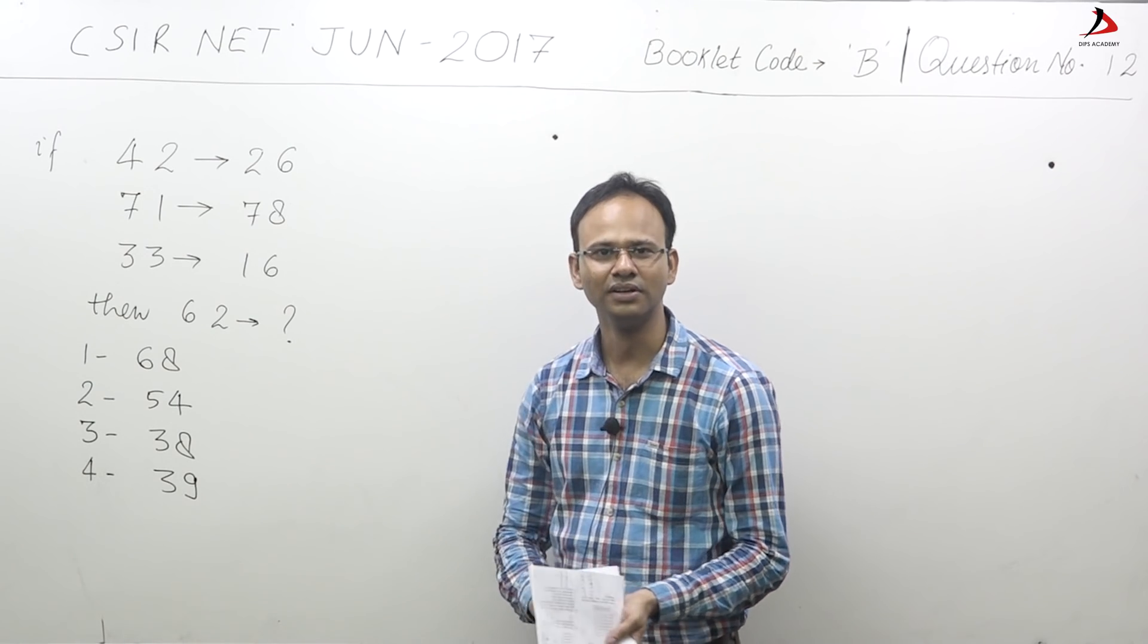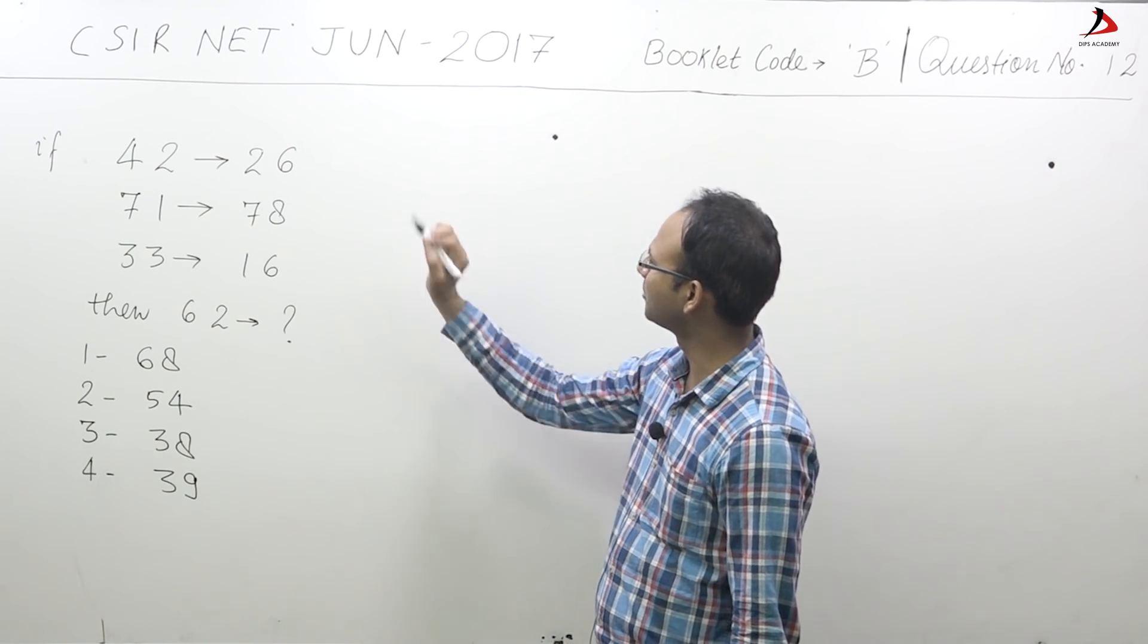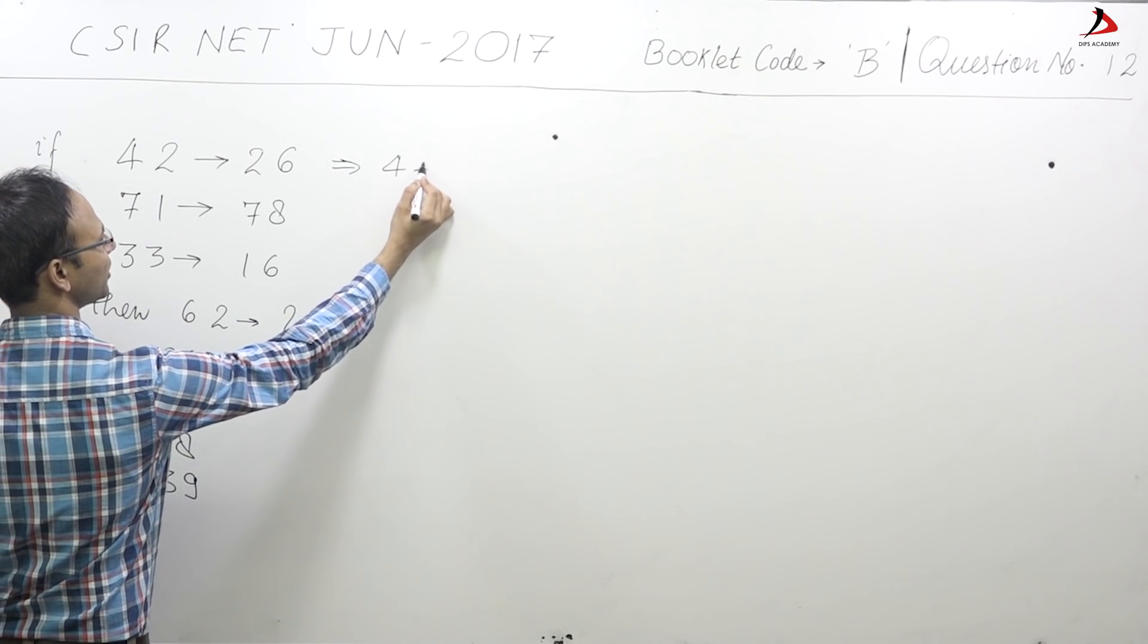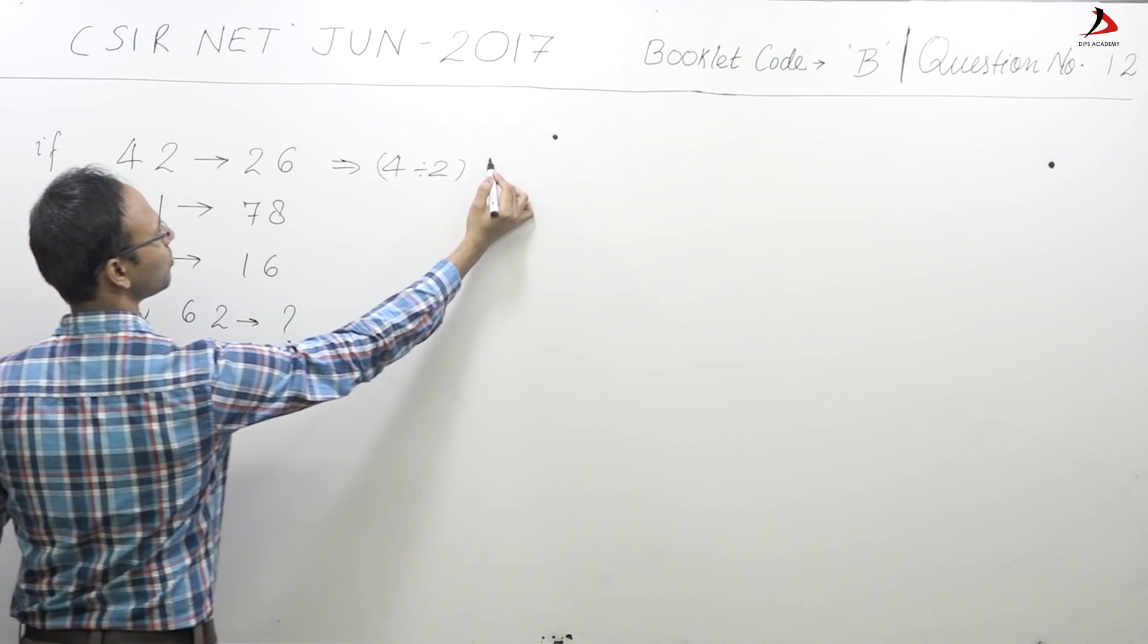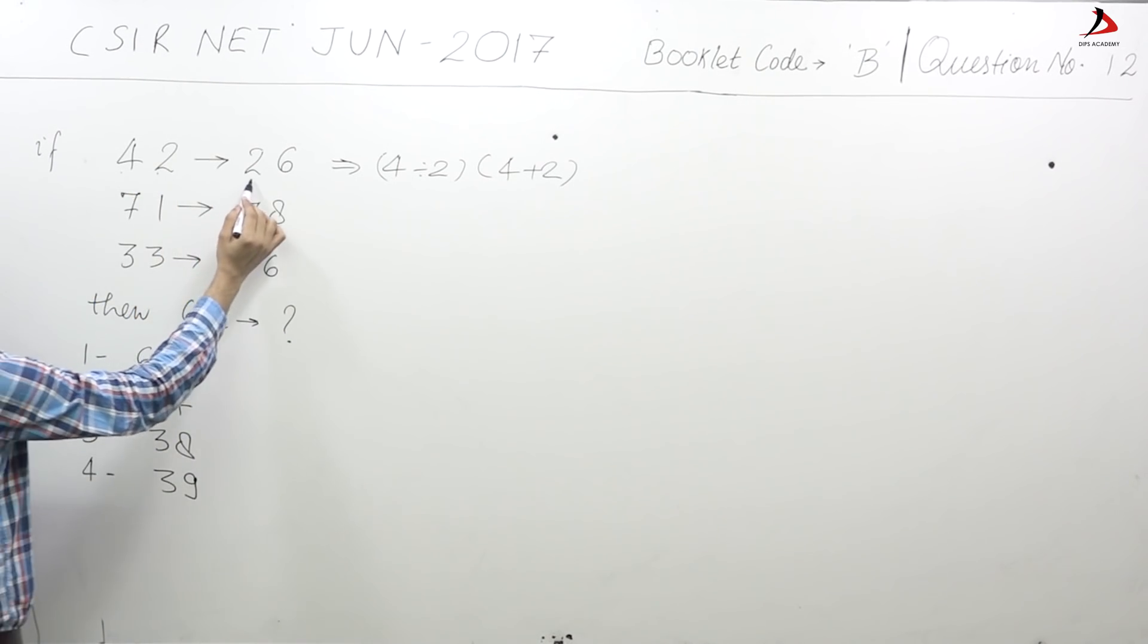Friends, it's a very simple question. You may just directly check it by observation. 42 means 26, so this is 4 divided by 2 and 4 plus 2. 4 divided by 2 will give you 2, 4 plus 2 will give you 6.